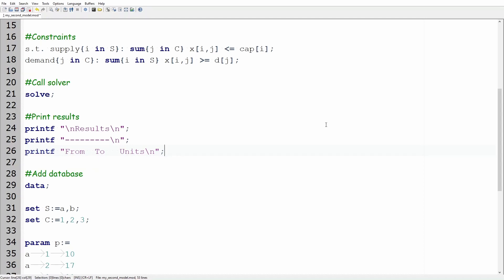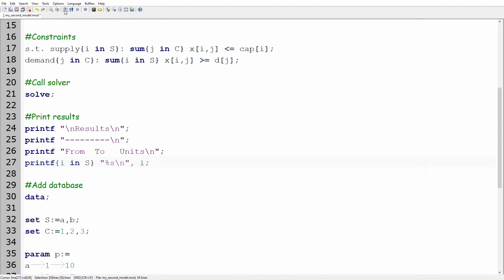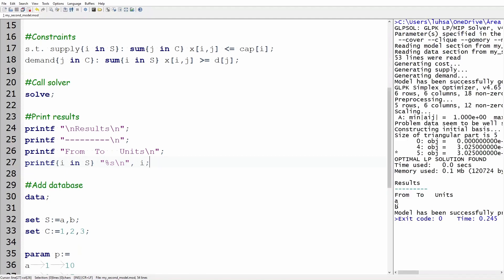Let's add one column at a time. The first column is under the word from and must include the suppliers a and b. Write printf keys i in s keys quotation mark percentage s backslash n quotation mark comma i semicolon. This piece of code states that i is in set s which in our case contain elements a and b. Note that where we wrote %s gusek will replace with the suppliers i. If the suppliers were labeled as numbers then you would have to use %g. If you compile and run the code you see that the suppliers a and b are under the column from.